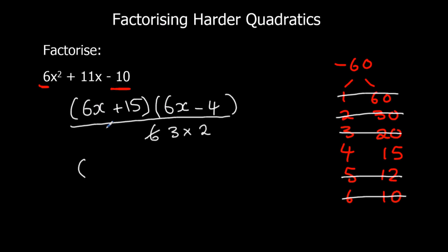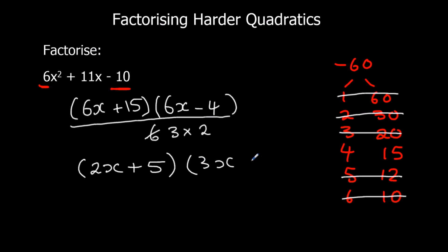I'm going to cancel the first bracket by 3 and the second bracket by 2. So 6x divided by 3 is 2x, and 15 divided by 3 is 5. Then 6x divided by 2 is 3x, and 4 divided by 2 is 2. So this is our final answer — the factorised version. We can check our answer by expanding it, and we should get back to 6x squared plus 11x minus 10.